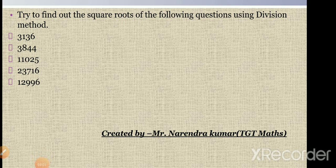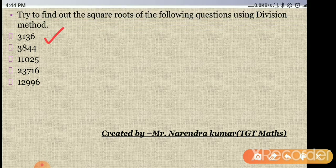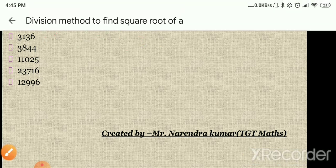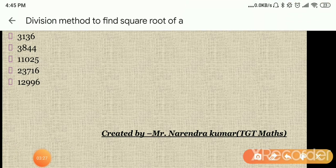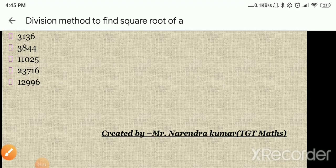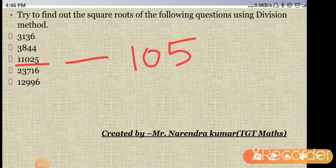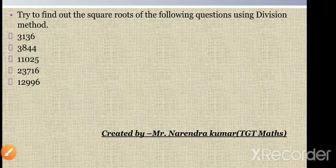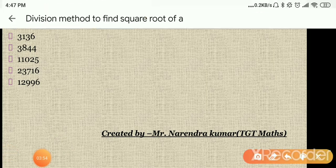Now you can see some numbers on screen — these questions are for your practice. Solve them using the division method. There are five questions. Question 1: find the square root of 3136 — the answer is 56. Question 2: 3844 — the answer is 62. Question 3: 11025 — the answer is 105. Question 4: 23716 — the answer is 154. Question 5: 12996 — the answer is 114.